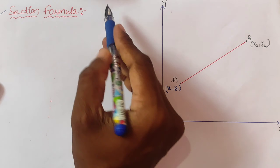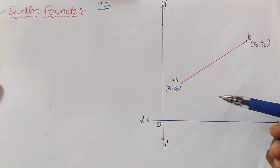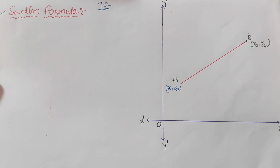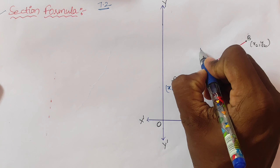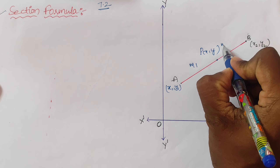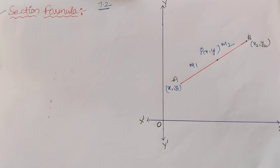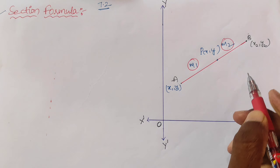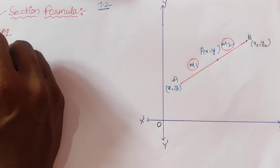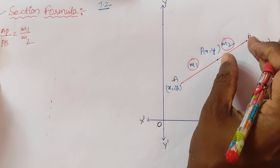Exercise 7.2 is totally dependent upon the section formula. In this plane, consider A and B as two points: A as (x1, y1) and B as (x2, y2). Assume that point P(x, y) divides AB in the ratio m1 : m2. So AP by PB equals m1 by m2. We consider this as equation number one.